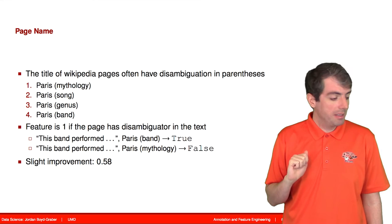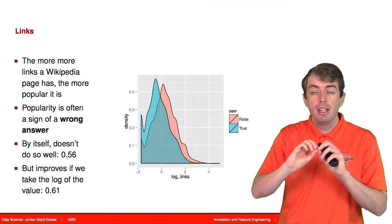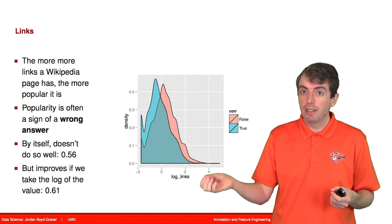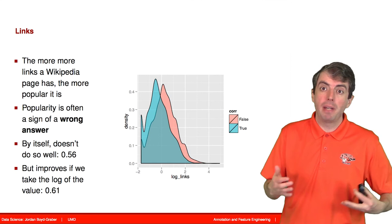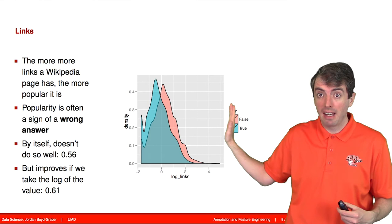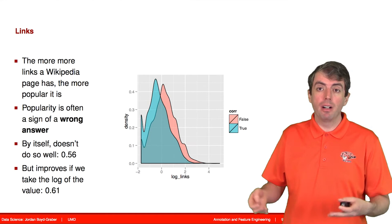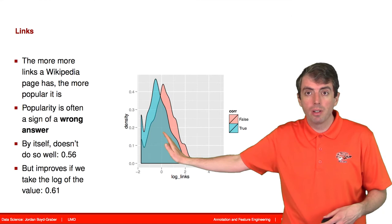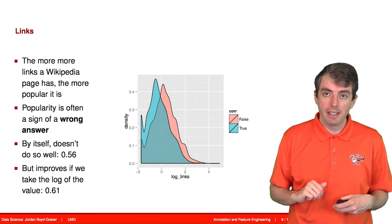So another thing that we can do is we can take a look at how many times you have a link to a Wikipedia page. And the number of links to a Wikipedia page shows how popular it is. And oftentimes, popular Wikipedia pages are wrong, as you can see in this plot. In red, you have the wrong answers, and those have a greater number of links than the right answers. If a page is popular, that often means that it's the wrong answer, which you can see from this graph. And so in red, you have the wrong answers, and those have more links than the right answers in green. And the right answers have a lower number of links.